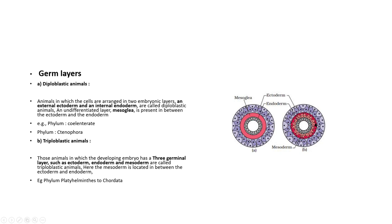Triploblastic animals have three germ layers. In diploblastic animals, the mesoderm is absent and replaced by a fluid-filled space called mesoglea. The phyla Cnidaria and Ctenophora are diploblastic, while others are triploblastic.